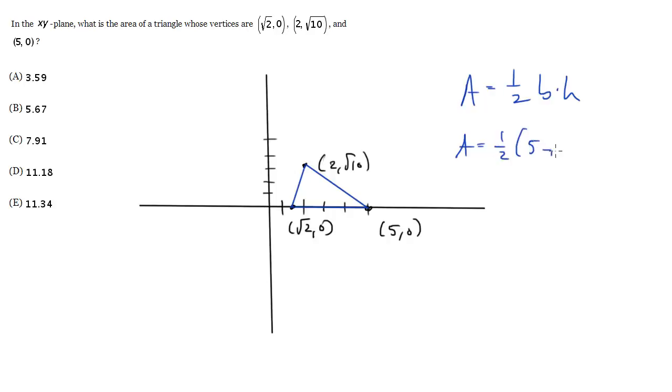So it's going to be 5 minus the square root of 2 for the base. And the height is just going to be the y-coordinate of this point. So here's our height, which is just the y-coordinate of this point, which is square root of 10. So times square root of 10.